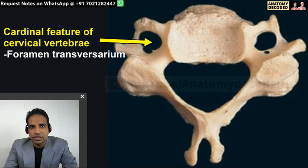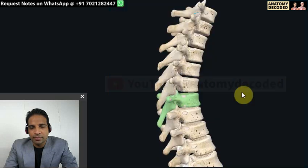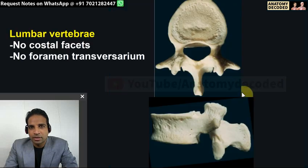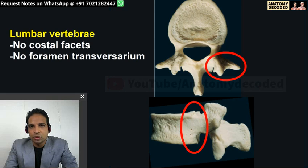A cardinal feature means it is specific to that vertebra. For cervical vertebrae, the cardinal feature is the presence of foramen transversarium. Lumbar vertebrae do not have any cardinal feature - they are identified by exclusion: no costal facets, no foramen transversarium, therefore it must be a lumbar vertebra.